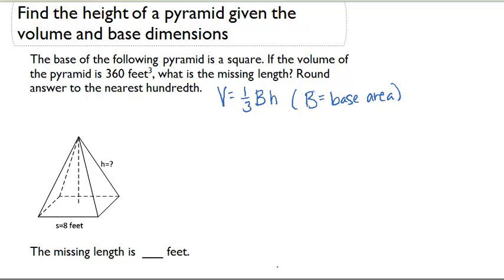Okay, let's look for the given information in this problem. It says the base of the following pyramid is a square. If the volume of the pyramid is 360 feet cubed, what is the missing length? Round your answer to the nearest hundredth.